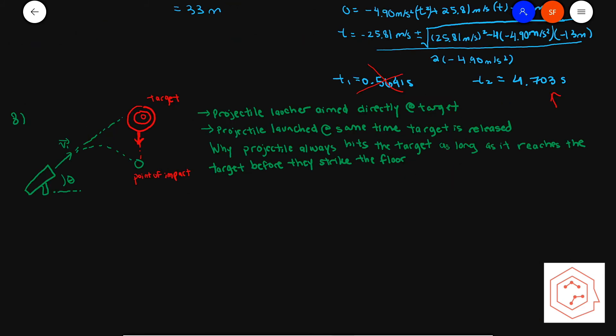Question number eight is a theory-type question with no calculations. In a physics demonstration, a projectile launcher on the floor is aimed directly at a target hanging from the ceiling. When the projectile is launched, the target is released at exactly the same time — explain why the projectile will always hit the target. The explanation is that they both experience the same acceleration due to gravity, 9.8 meters per second squared downward, which is constant and independent of mass.